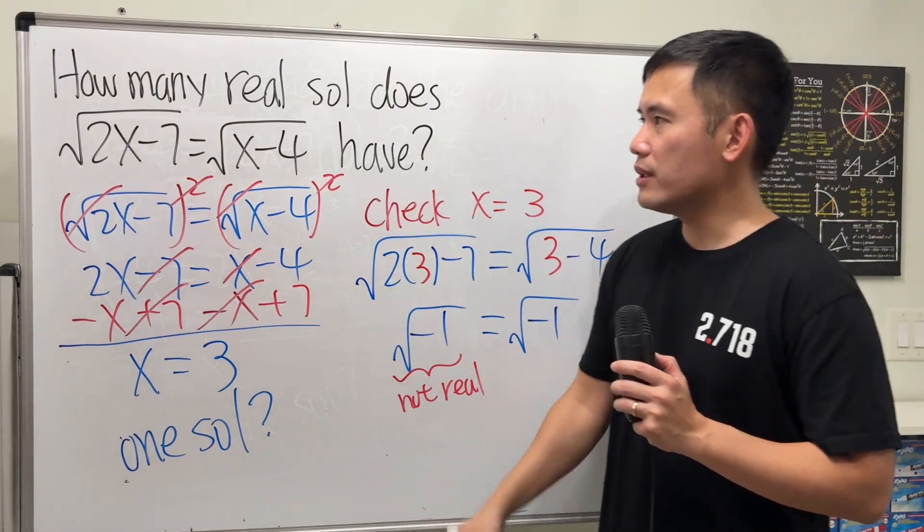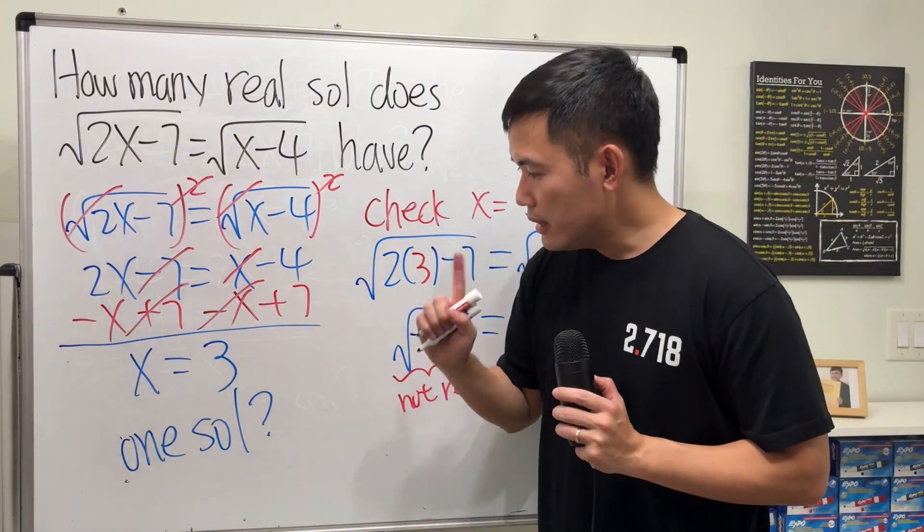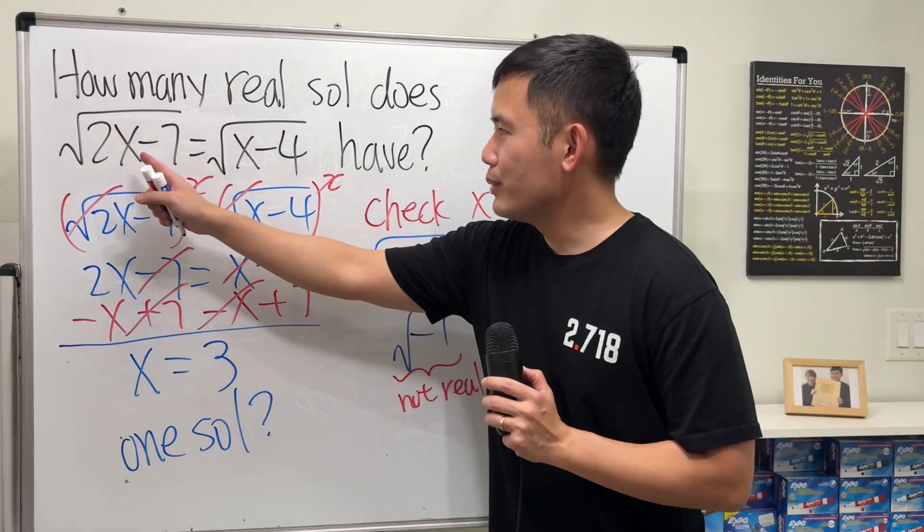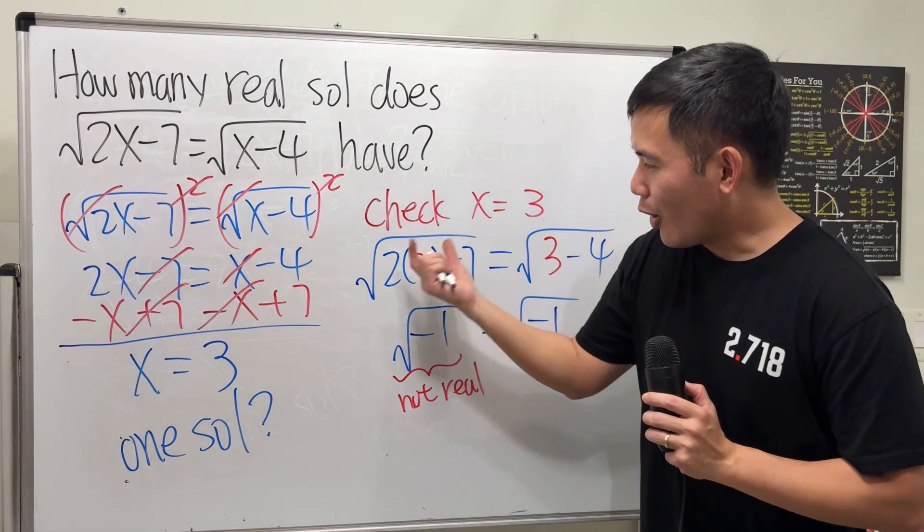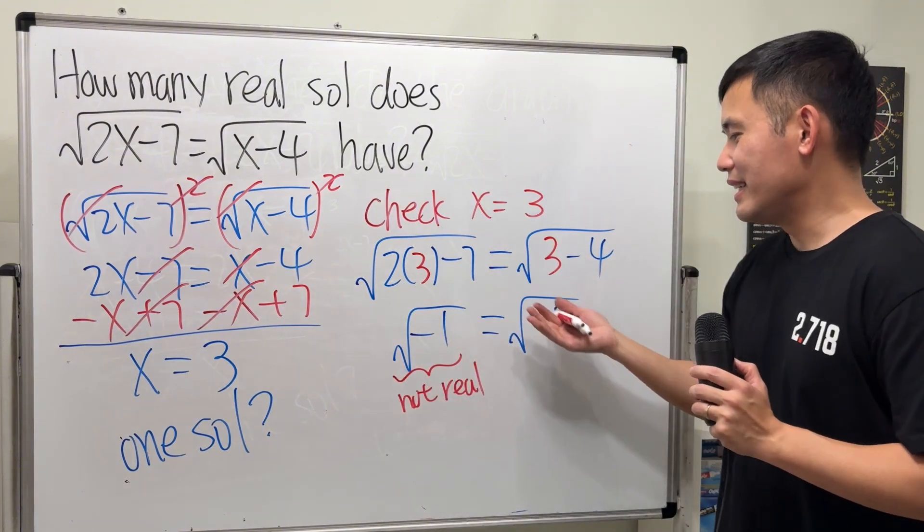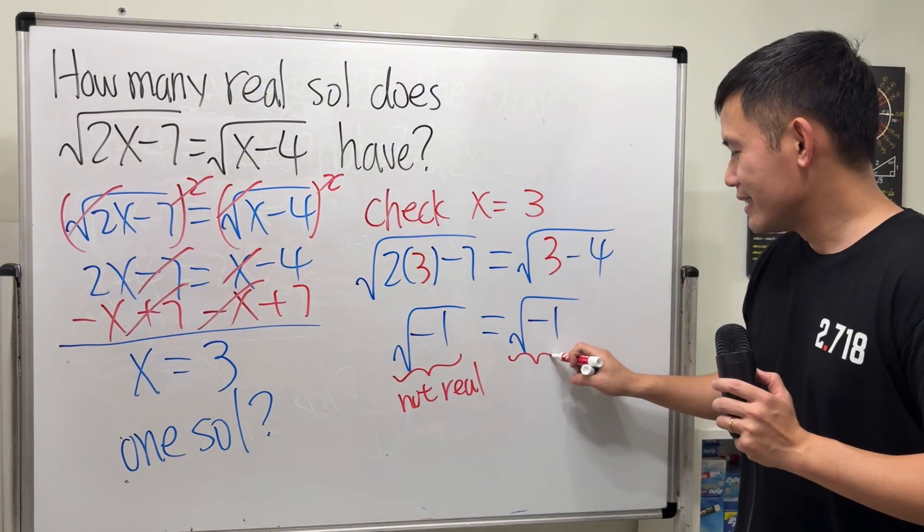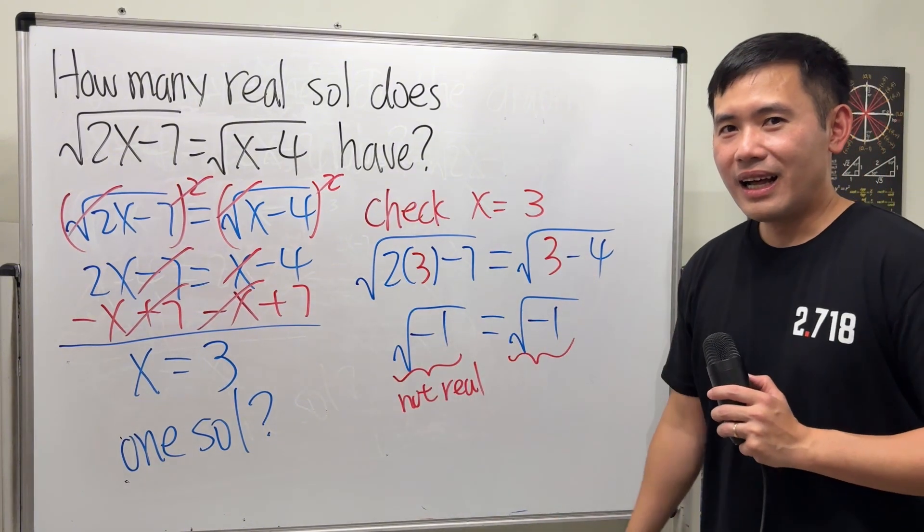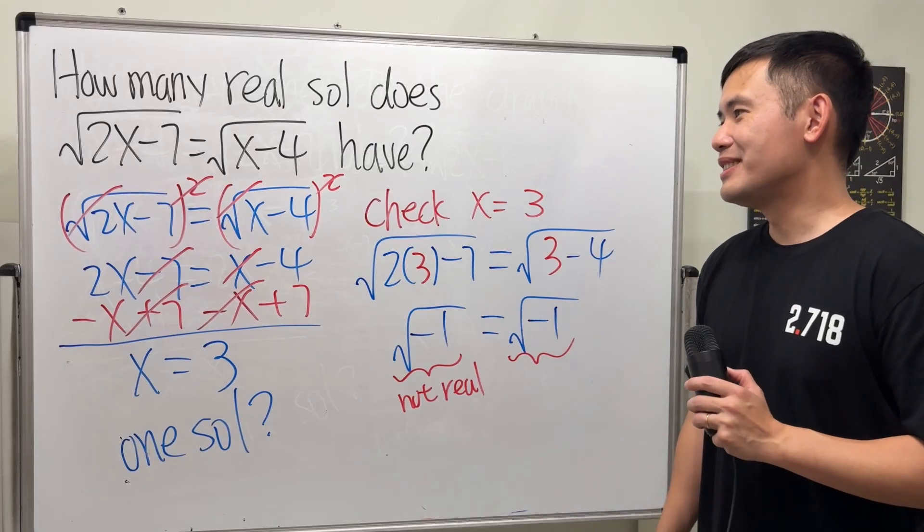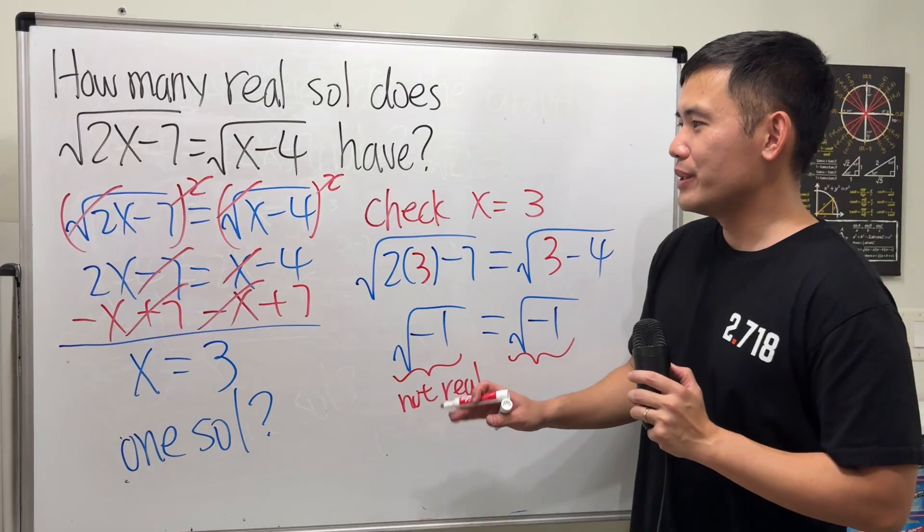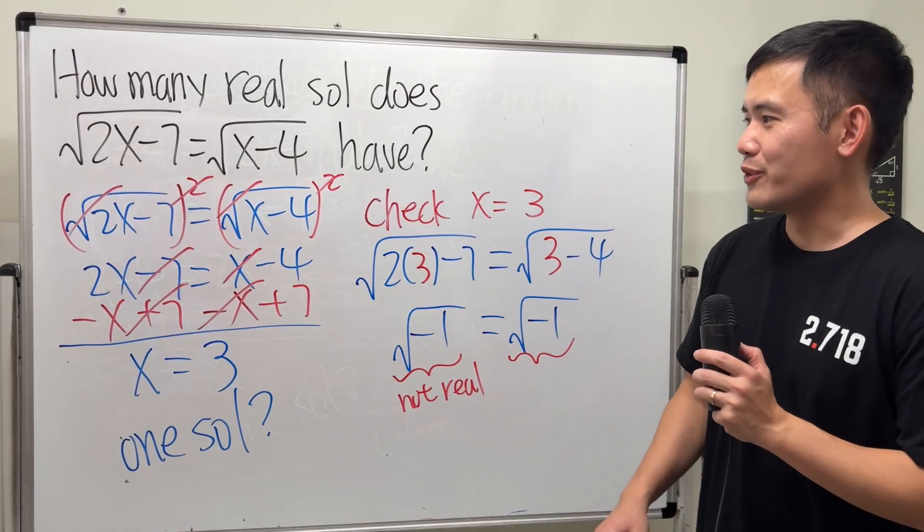So how would you answer this question then? 3 is real. But when you plug in 3 into the original equation, the output from the left-hand side and the right-hand side, they are not real. So how would you really answer this one right here?